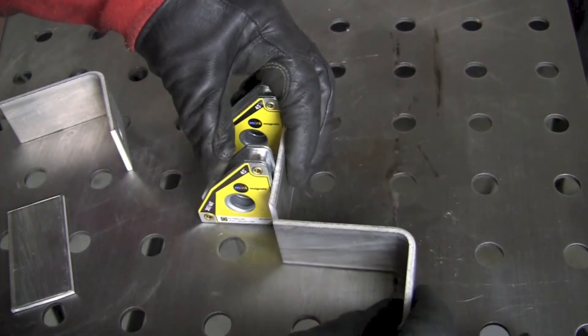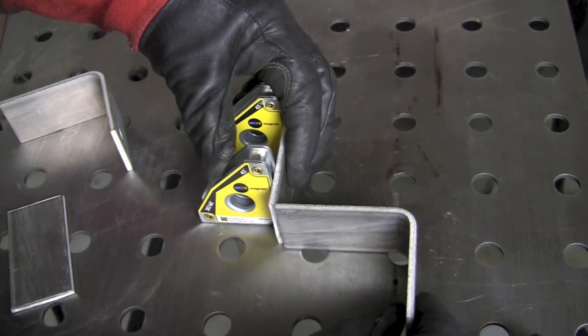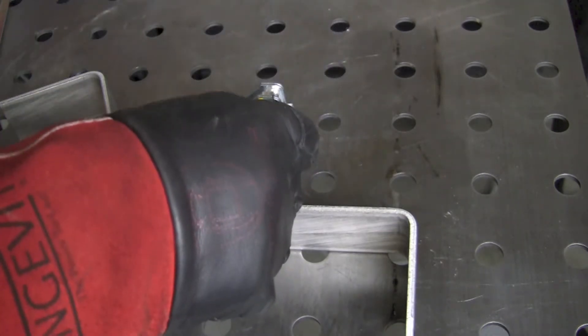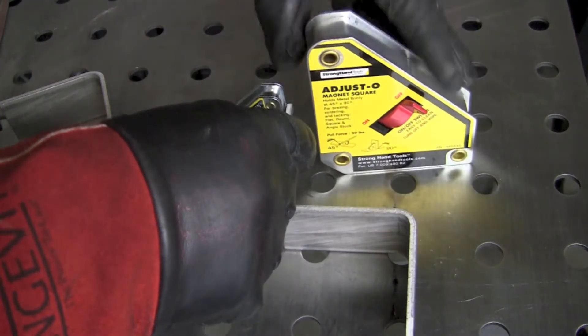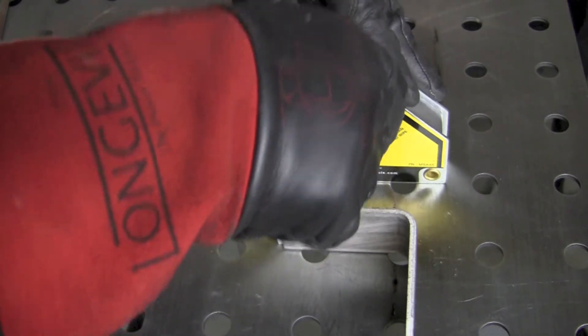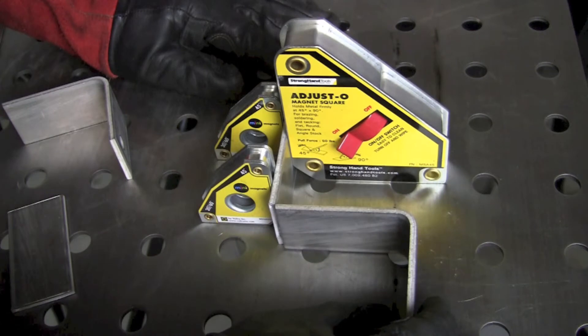I'll do this one over here first. It's a little easier to see. So I'll get that set up there right there. Then I'm going to take the other clamp and I'm going to come around and put it on this side here. I'm going to turn that on and that'll hold that piece in position there until I get a chance to get it tack welded.